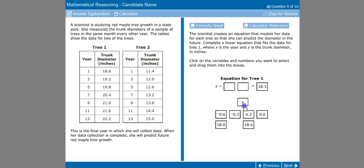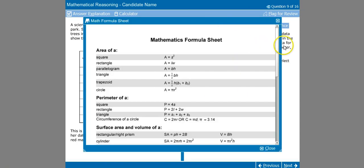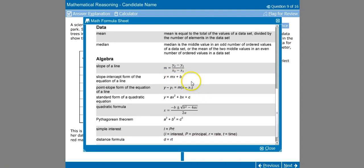This next one here is part two of this question. The scientist creates an equation that models her data for each tree so that she can predict the diameter in the future. So complete a linear equation that fits the data for tree one, where X is the year and Y is the trunk diameter in inches. Click on the variables and the numbers that you want to select and drag them into the boxes. Let's go ahead and look at the formula sheet, which on the GED test you would be able to do. You would see the formula for a linear equation, the slope intercept form of the equation of a line, Y equals MX plus B.